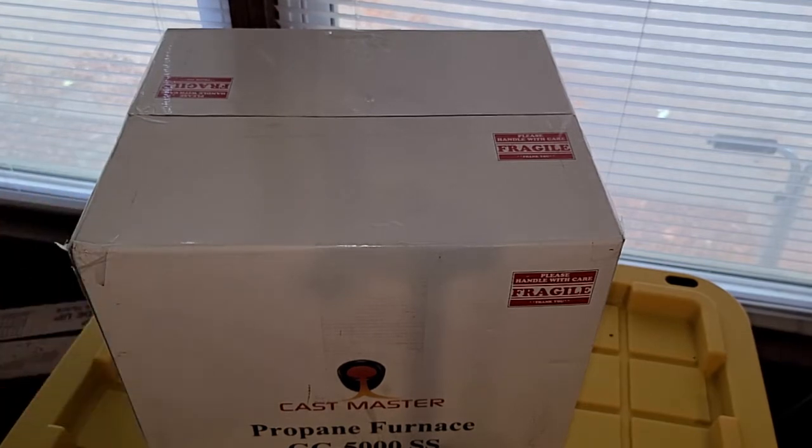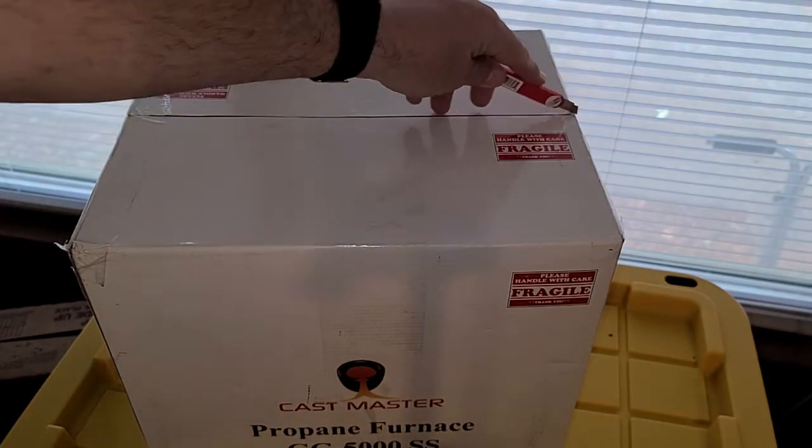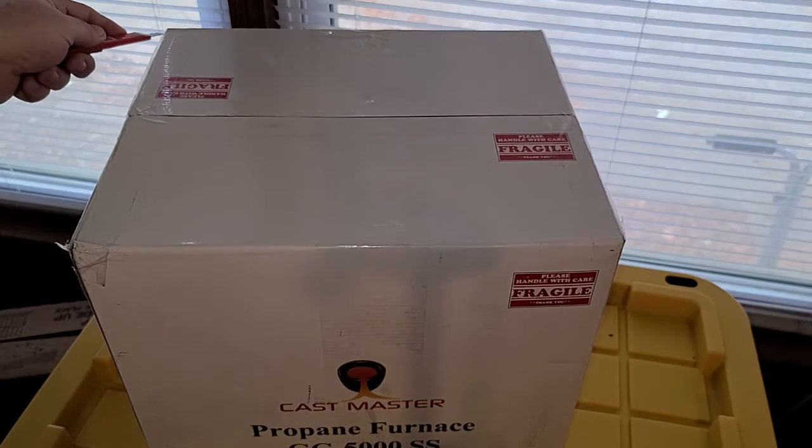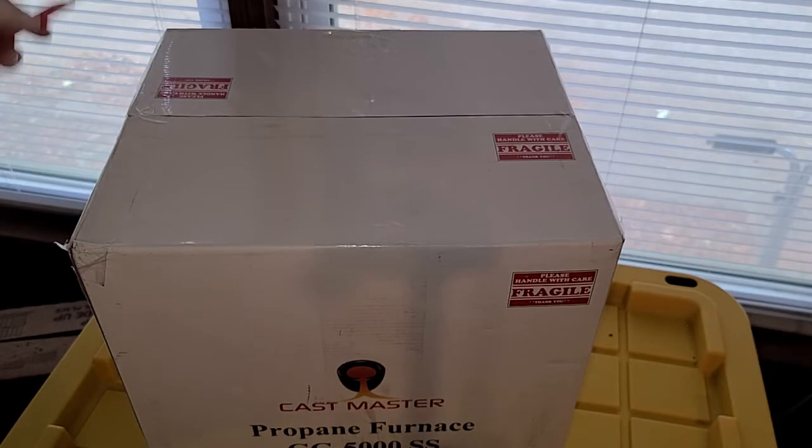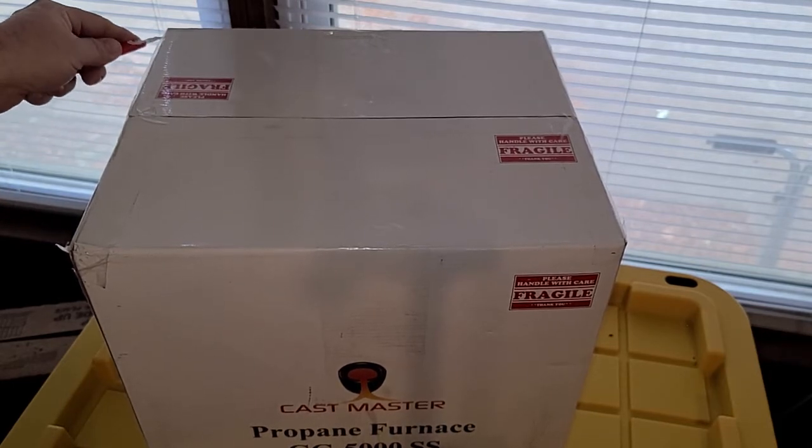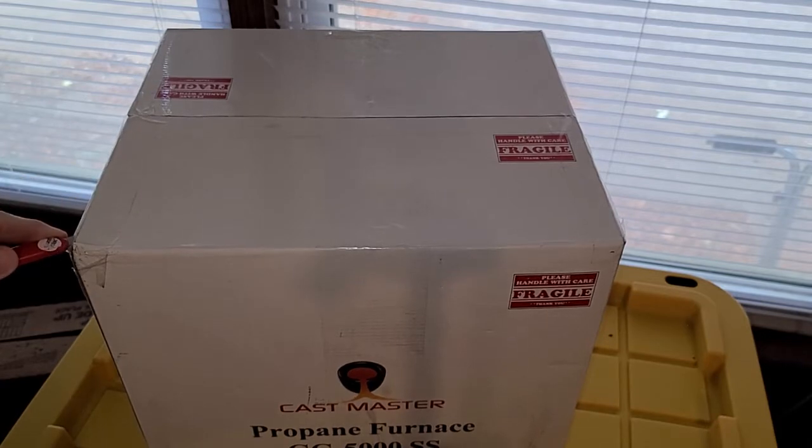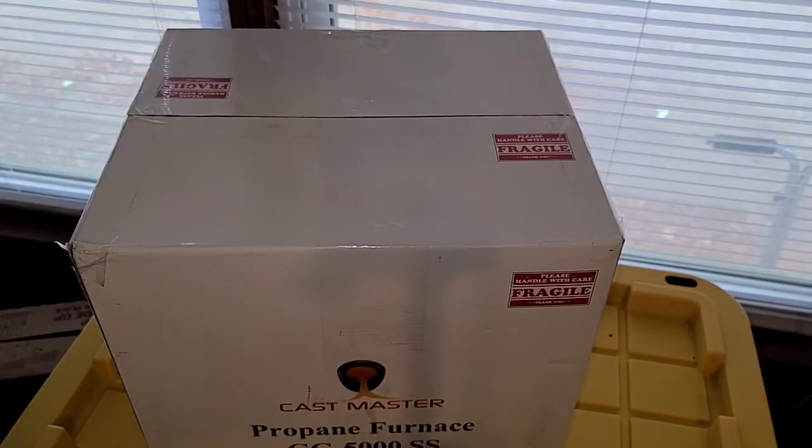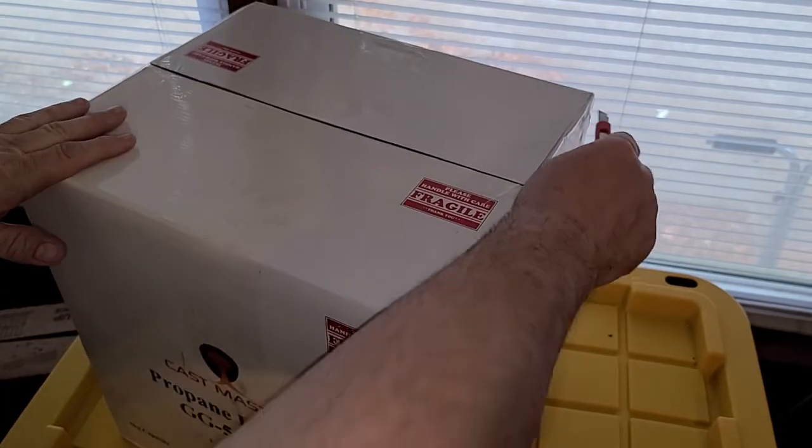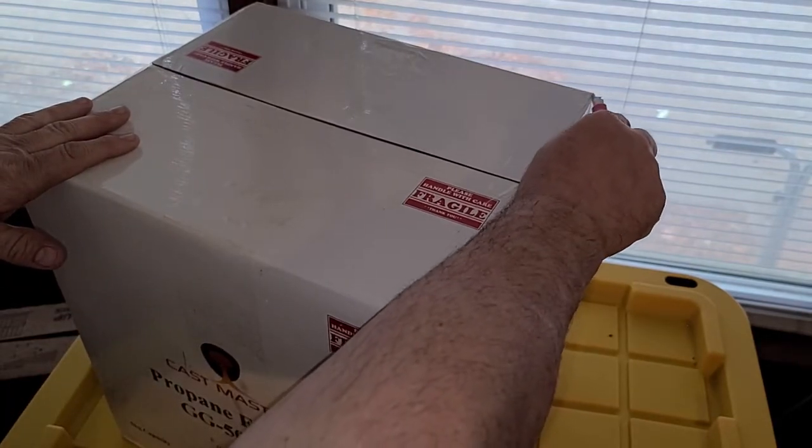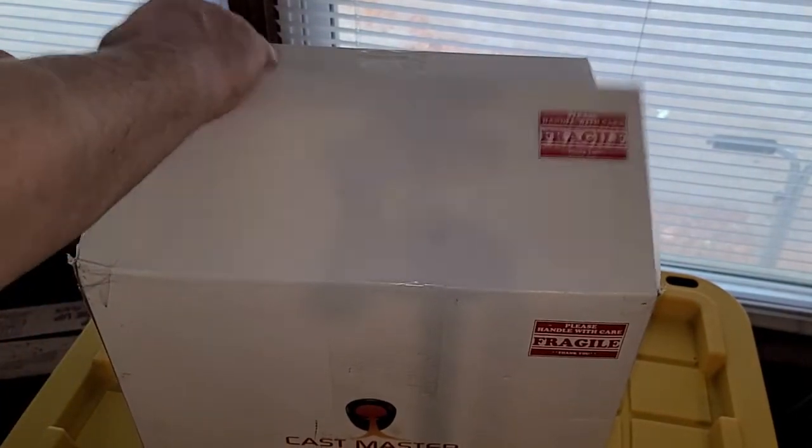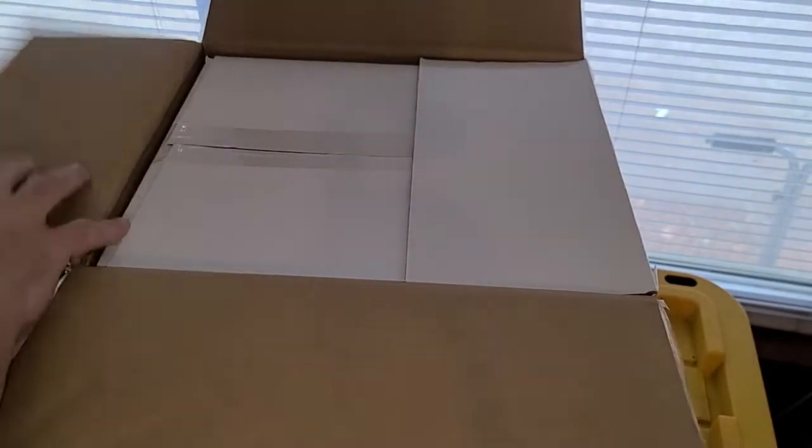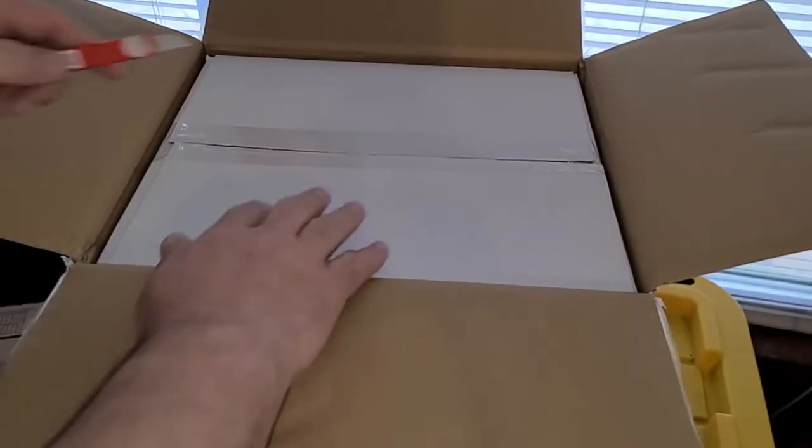So I'm going to open this and I hope it's not broken inside. This is a Cast Master propane furnace GG 5000 stainless steel. It would have been really easy to make one, but I'm kind of lazy. I can't go back and forth to the parts store right now to get the plumbing supplies to make all the gas parts. So let's take a look at this. Hopefully the crucible isn't broken in there.